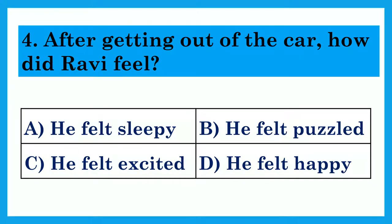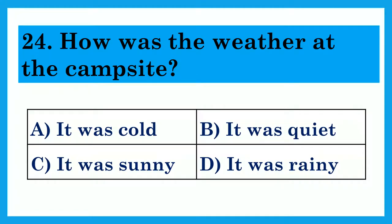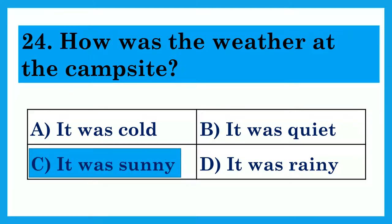After getting out of the car, how did Ravi feel? Option A: He felt sleepy. Option B: He felt puzzled. Option C: He felt excited. Option D: He felt happy. The answer is Option B: He felt puzzled. How was the weather at the campsite? Option A: It was cold. Option B: It was quiet. Option C: It was sunny. Option D: It was rainy. The answer is Option C: It was sunny.